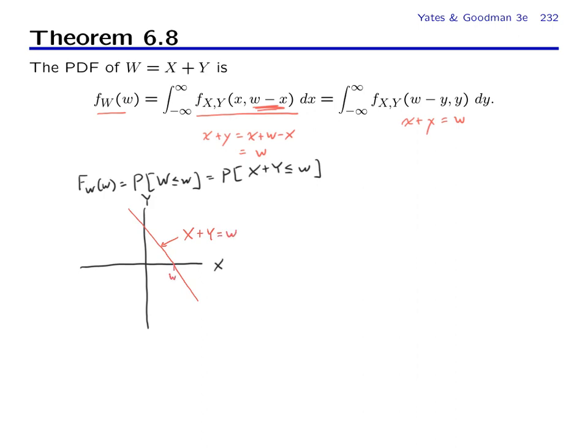It crosses here at the place where x is w and y is 0, and it crosses here where y is w and x is 0. And the region that we're interested in is all x's and y's that are down below this line, because the line is x plus y equals w but our probability of interest is x plus y less than or equal to w.